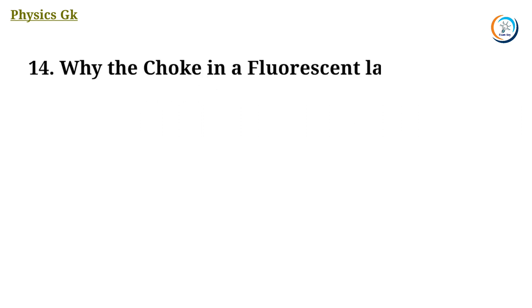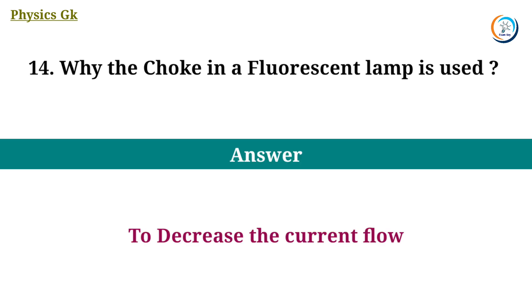Why the choke in a fluorescent lamp is used? Answer. To decrease the current flow.